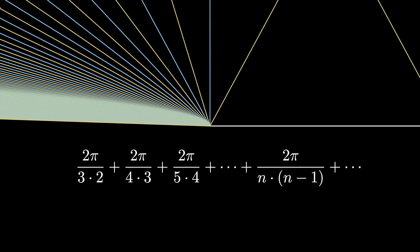the full angle measurement is 2π over 3 times 2 plus 2π over 4 times 3 plus 2π over 5 times 4, and so on, each time adding up angles of the form 2π over n times n-1.